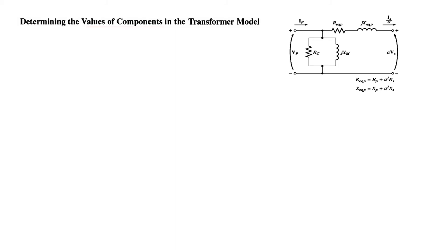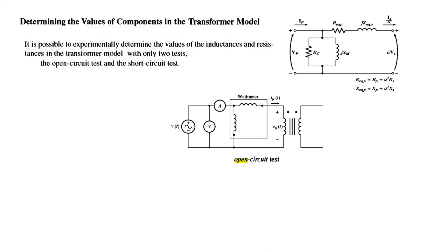Now, we need to determine the values of the components in the model, all these values. So it is possible to experimentally determine the values of the inductances and resistances in the transformer model, with only two sets of tests. Number one is the open circuit test and the other is the short circuit test.